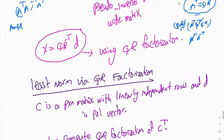Just to clarify: R negative transpose means R inverse transpose, which is the same as R transpose inverse. Now let's see the algorithm to find the least norm solution via QR factorization. C is a P by N matrix with linearly independent rows, and D is a P by 1 vector. First, compute the QR factorization of C transpose.